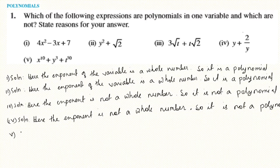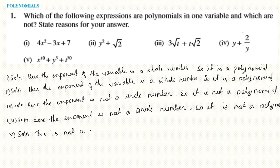Number five: x to the power 10, y to the power 3, and t to the power 50. All exponents 10, 3, and 50 are whole numbers. However, this expression has three variables, so it is not a polynomial in one variable.